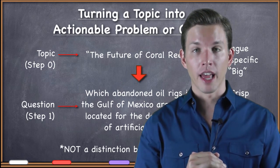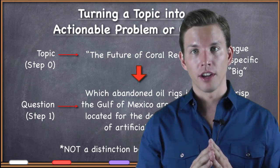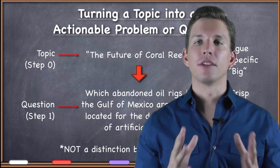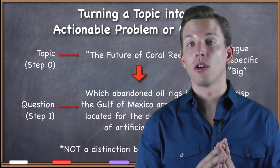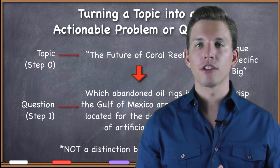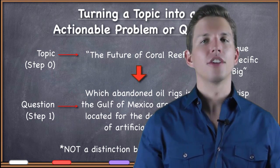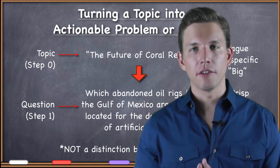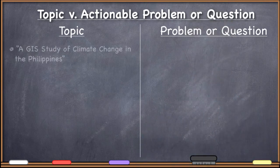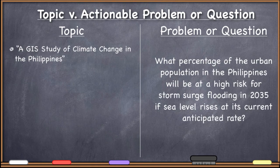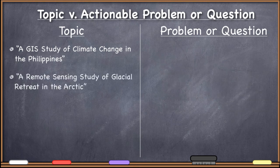The future of coral reefs — it's impossible to sit down and do a GIS project on that. Then you develop a whole bunch of crisp, clear questions that might go into addressing that topic. Some will be easy, some much harder — so it's not exactly easy vs. hard, it's about possibility. Let me give a few final examples. Topic: a GIS study of climate change in the Philippines. Problem: 'What percentage of the urban population in the Philippines will be at high risk for storm surge flooding in 2035 if sea level rises at its current anticipated rate?'